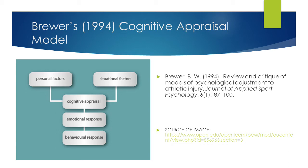The model suggests that how an individual appraises their injury — their cognitive appraisal — dictates their psychological or emotional response to the injury. The model further proposes that these emotional responses will affect the individual's behaviour in relation to the injury, for example whether or not they will adhere to their injury rehabilitation program.